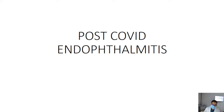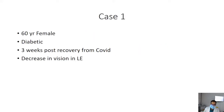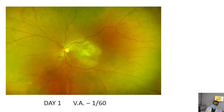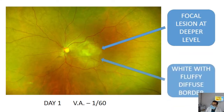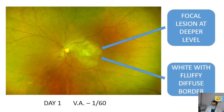Good afternoon everyone. Today we are going to discuss post-COVID endophthalmitis. In the first case, it was a 60-year-old female who was diabetic, presented to us three weeks post-recovery from COVID with a complaint of decrease in vision in the left eye. On examination on day one, the visual acuity was 1/60. On retinal examination, there was a focal lesion at the deeper level of the retina, which was white with fluffy diffuse borders.